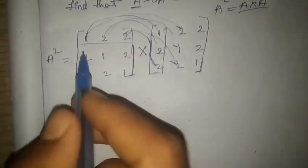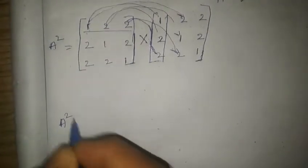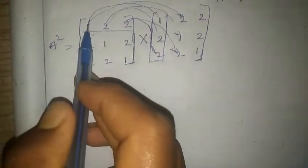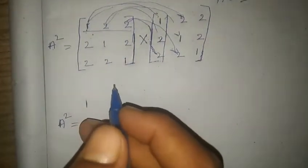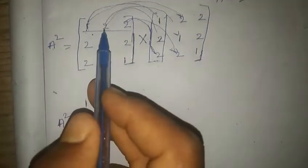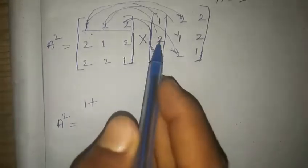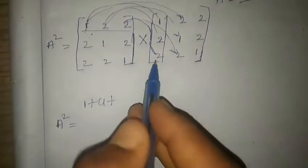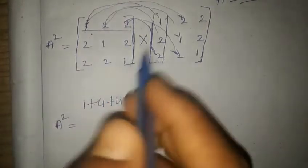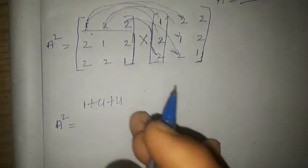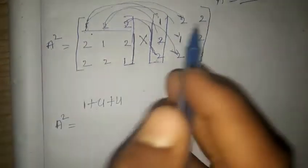For the first row, first column: 1×1 = 1, plus 2×2 = 4, plus 2×2 = 4. So the first row first column entry is 1 + 4 + 4 = 9.